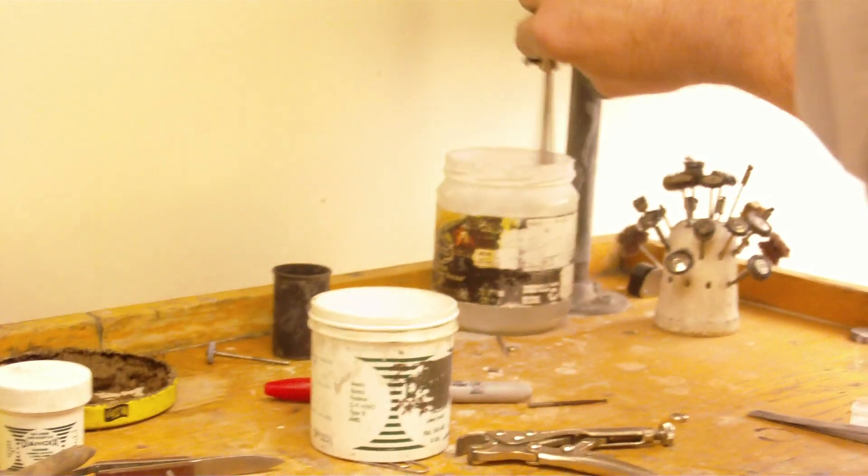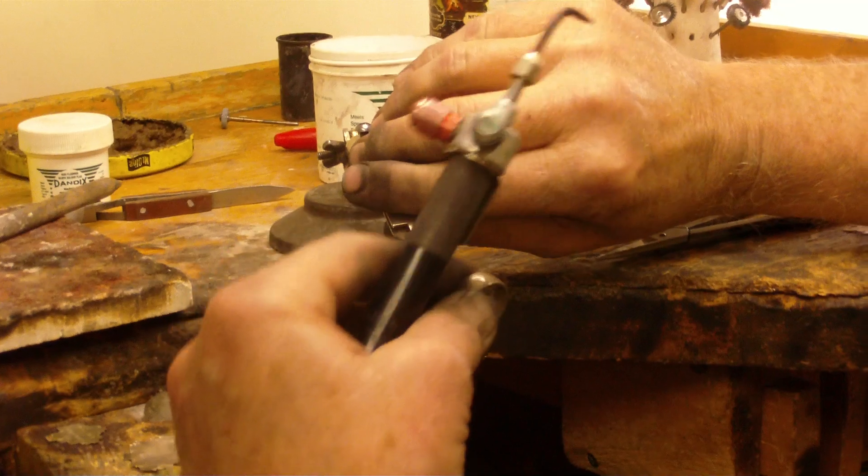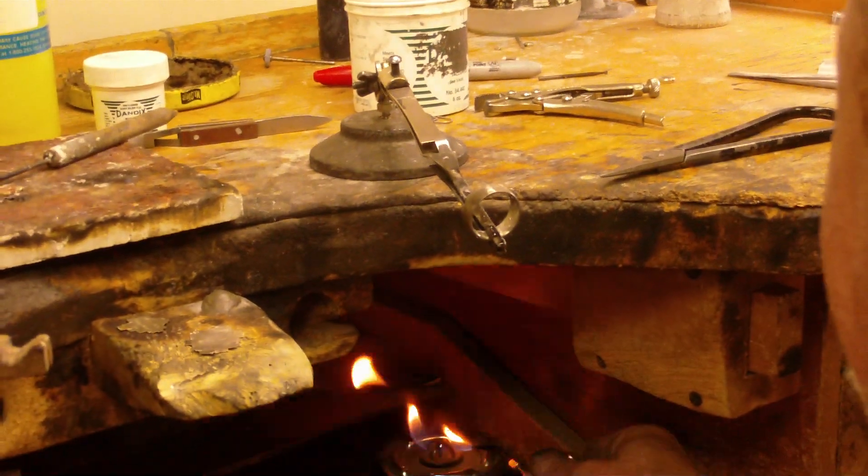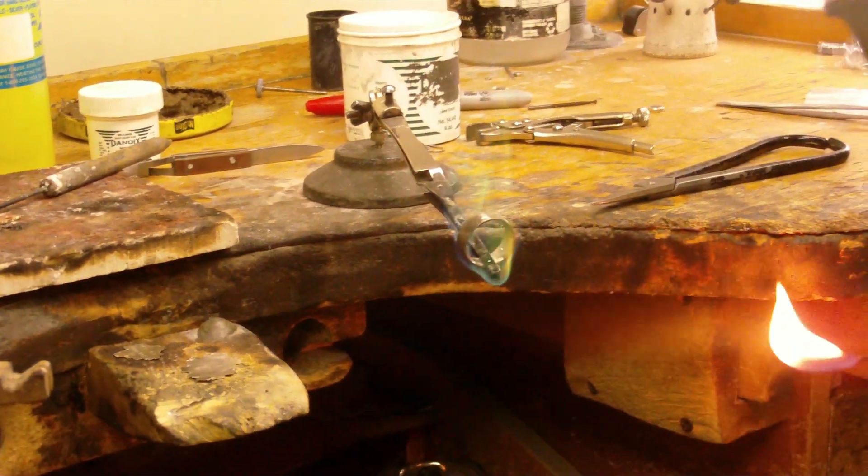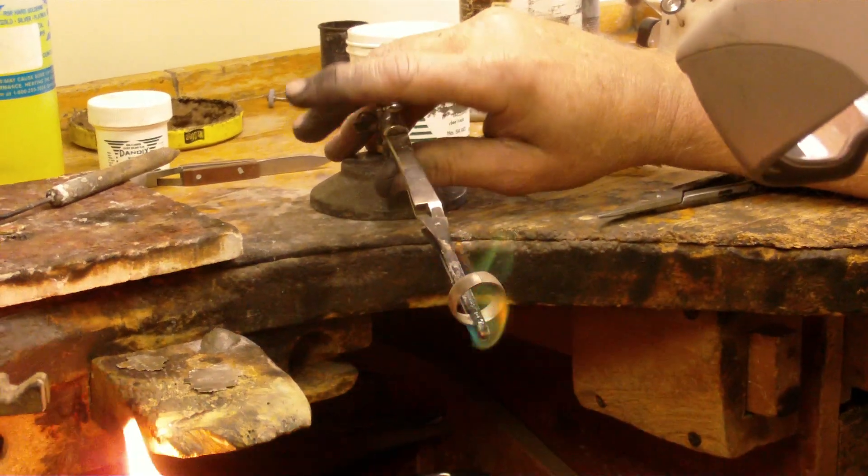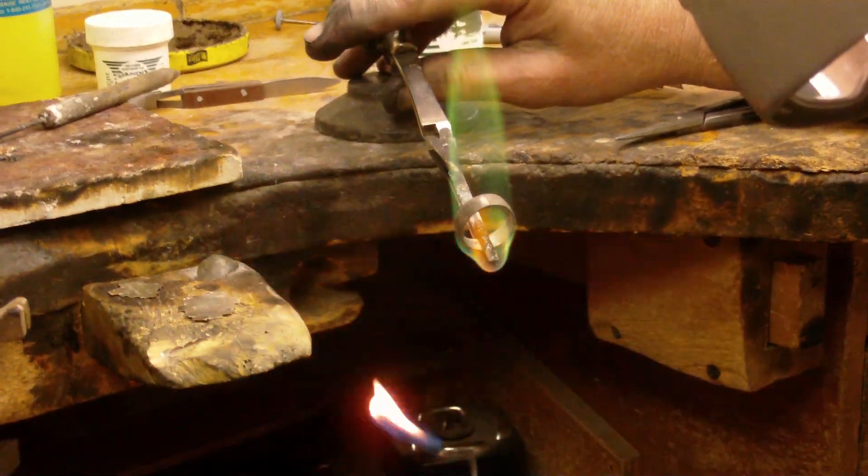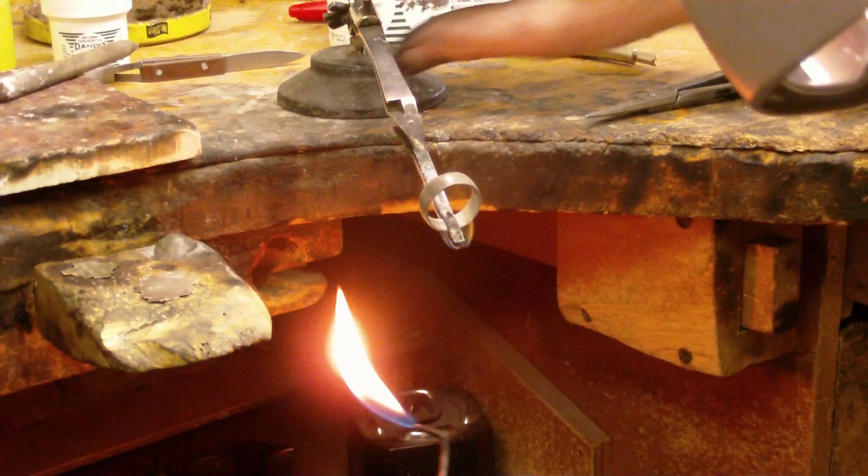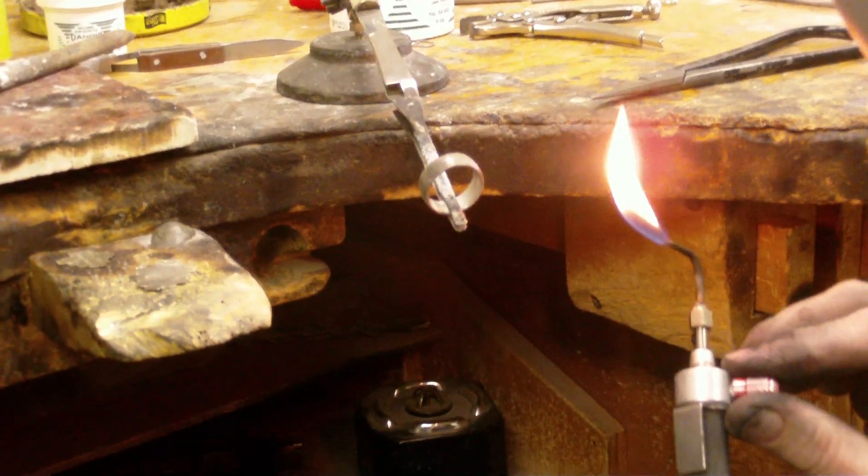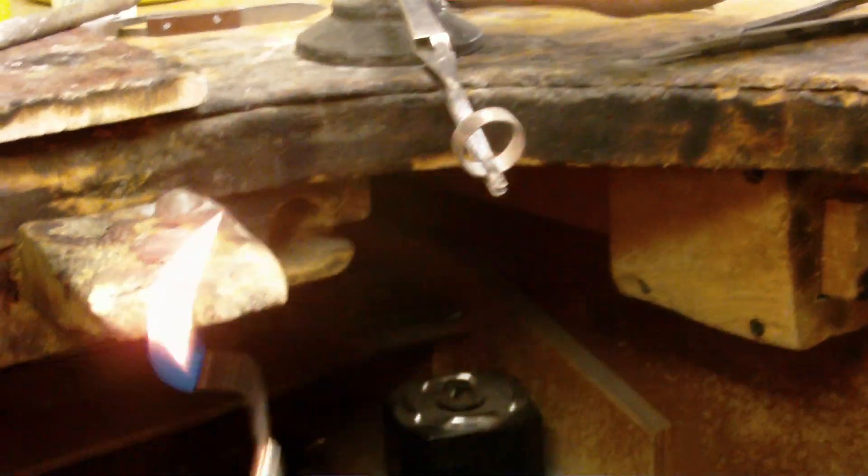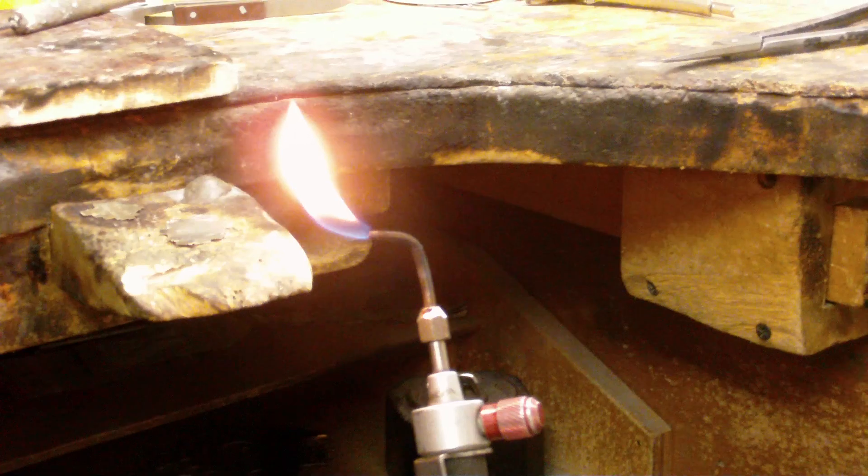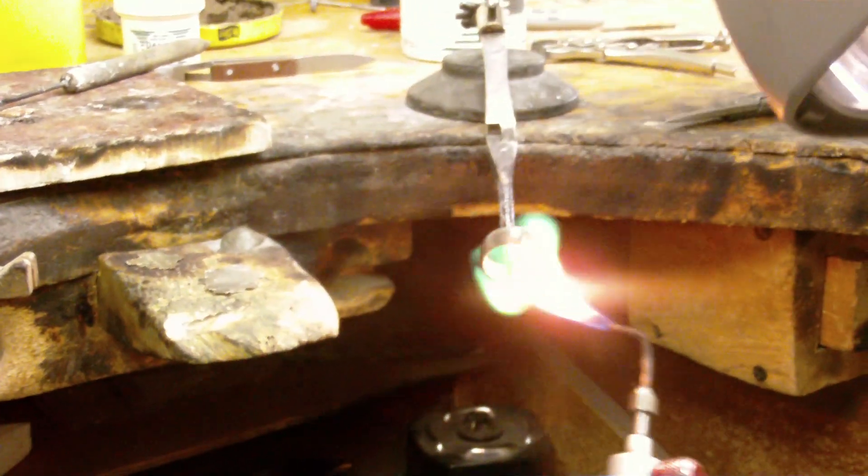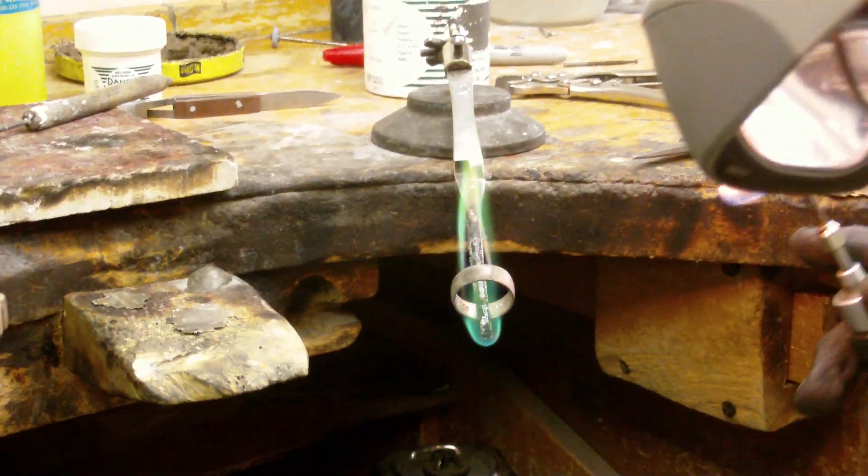First thing, dip it in boric acid. Light it on fire. Now, you need to understand something known as the principles of thermal dynamics and thermal transfer. Everything transfers thermal energy at a given rate. Silver and gold are very different.